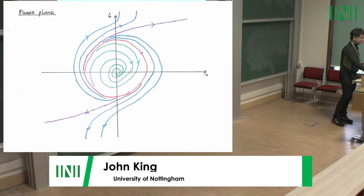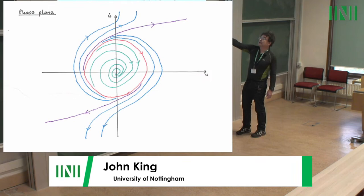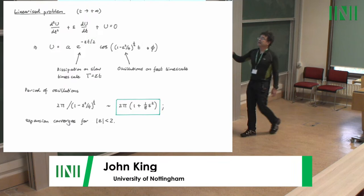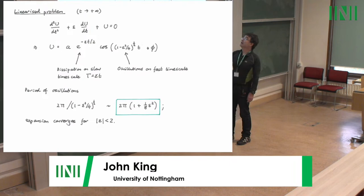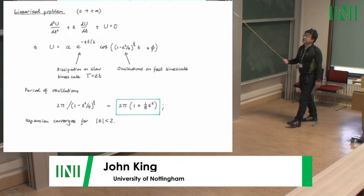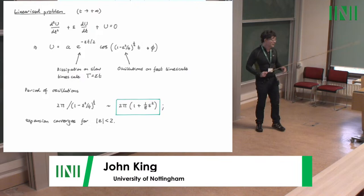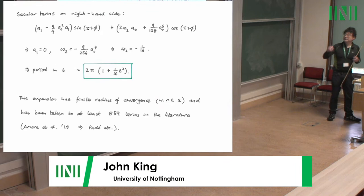The other very simple limit is the linearized one, which has a rather similar structure to the limit cycle. As you spiral close to the origin you throw away the nonlinearity and do the simplest thing. This makes the two-scale nature of the problem entirely explicit: there's dissipation on a very slow scale and oscillations on a much faster scale. The period in this limit has a finite radius of convergence in epsilon — modulus of epsilon less than two — and takes a specific form.